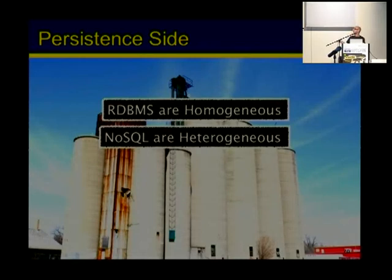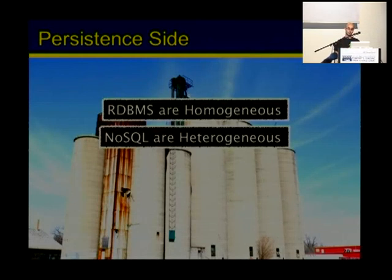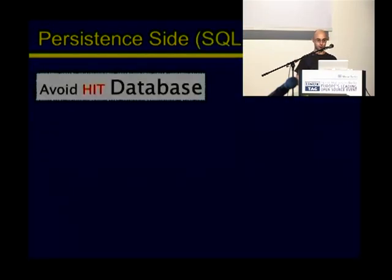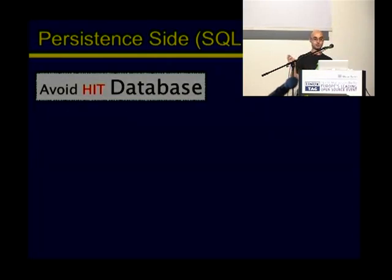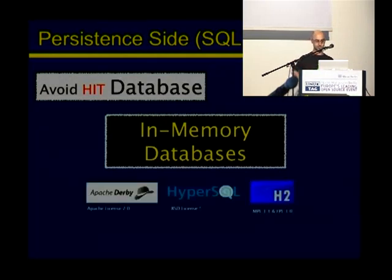Finally, to close the unit testing part, there is the persistent side. It's hard to think about a Java Enterprise Edition application without a persistent layer. But we said you cannot access a file system or network. So how can we write unit tests that imply a database connection? This depends on whether you are using an SQL or NoSQL approach. For the SQL approach with a relational database management system, you must avoid hitting the database because it's a slow operation. But if you use an in-memory database, the operation will be fast. In Java there are many in-memory databases, for example Derby, HyperSQL, or H2.